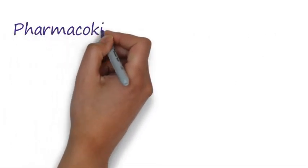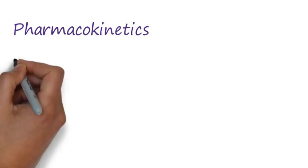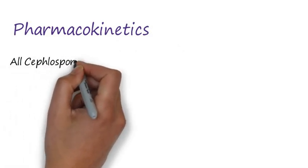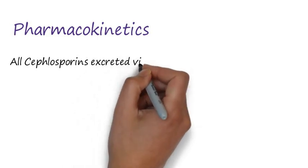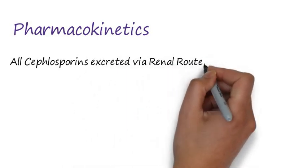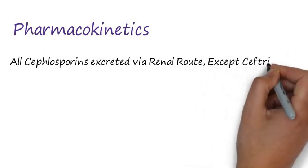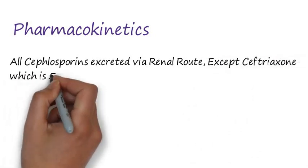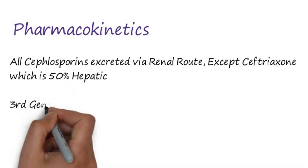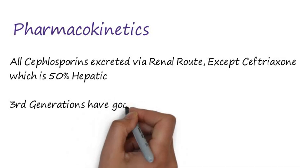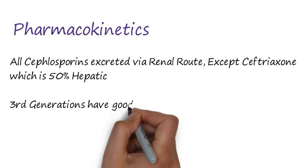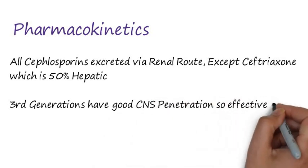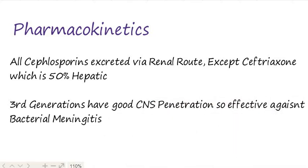Regarding pharmacokinetics, all cephalosporins are generally excreted via the renal route, except cefoperazone which has 50% hepatic clearance. This means cefoperazone can be used for patients having renal compromise or renal impairment. Third generation cephalosporins have good CNS penetration, so they are effective against bacteria causing CNS infections.